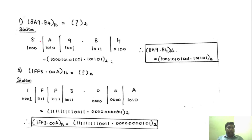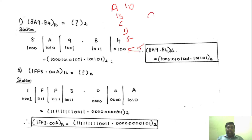The problem is 8A9.B4 in base 16. You can see that B is nothing but 11. So A is 10, B is 11, C is 12, D is 13, E is 14, and F is 15 — that is from 10 to 15. Now, how do you write them? You have to write in 8421 code. For 4, it is 0100 — that is what is written here.